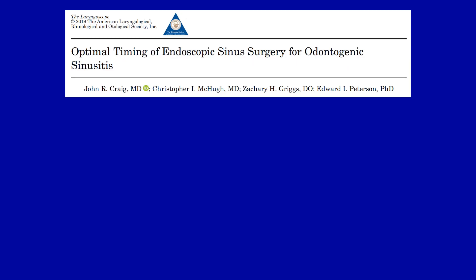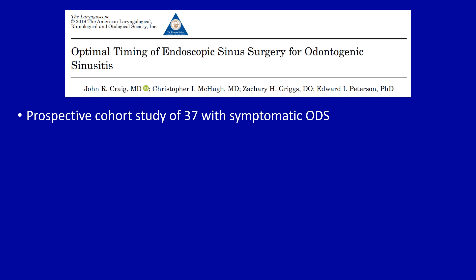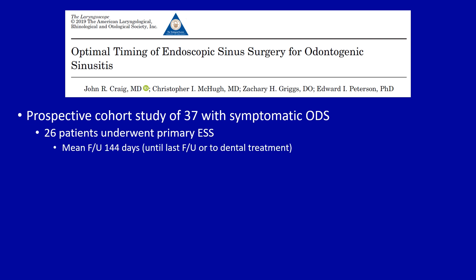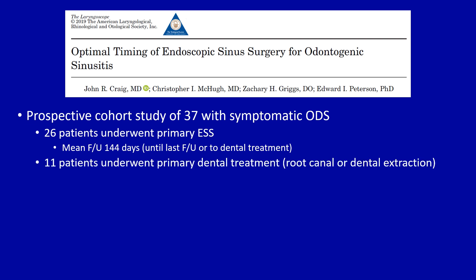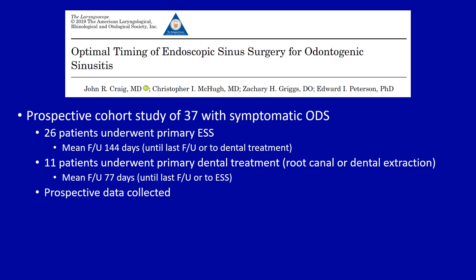This led me to do a three-year prospective cohort study of 37 patients with symptomatic odontogenic sinusitis. 26 patients underwent primary endoscopic sinus surgery and were followed for a mean of 144 days — nearly five months — until their last follow-up or until they received dental treatment. Eleven patients chose primary dental treatment, either a root canal or dental extraction, followed for a mean of 77 days. Data collected included pre- and post-operative symptoms, SNOT-22 quality of life scores, endoscopy findings including middle meatal edema, polyps, or pus, and pre-operative CT sinus imaging to grade disease extent.